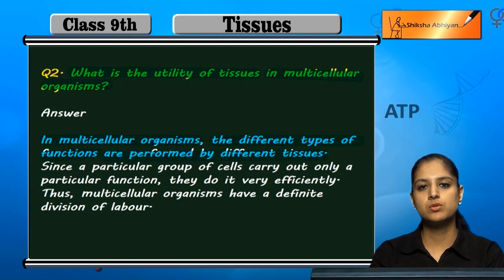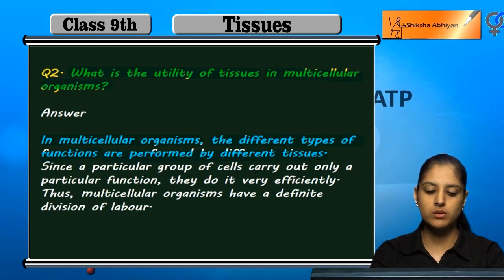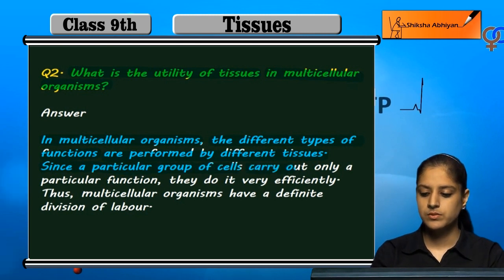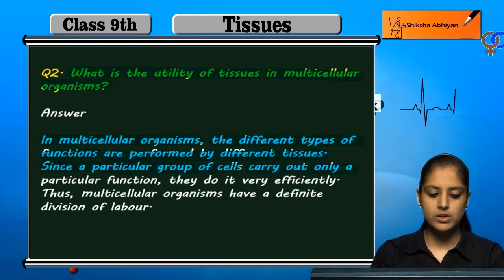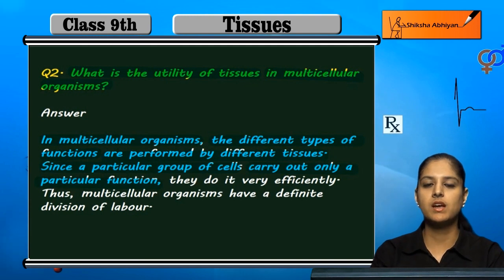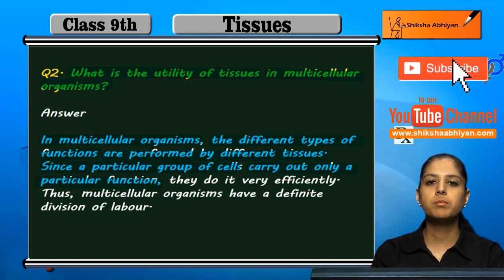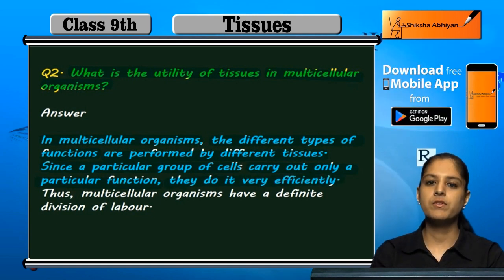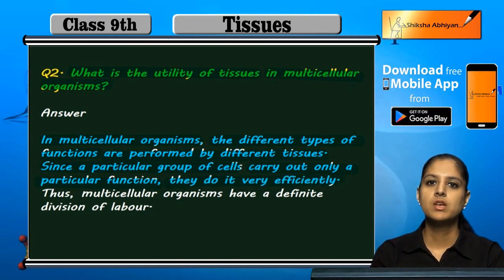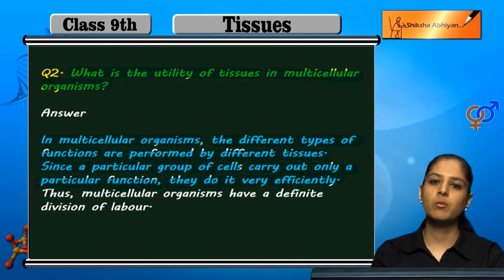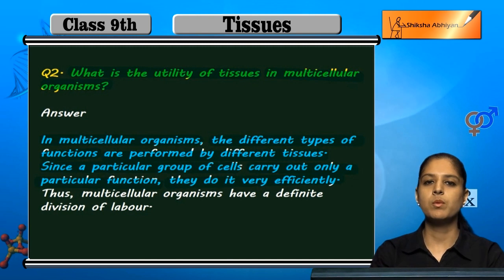Different types of tissues carry out only a particular function, because one particular group of cells forms one type of tissue. They carry out a particular function, so whatever function they carry out is done very efficiently. If a particular person does one work, then they can do that same work very well.